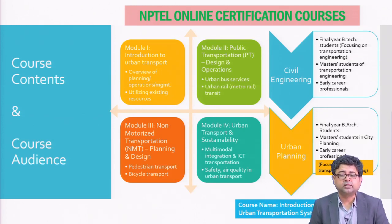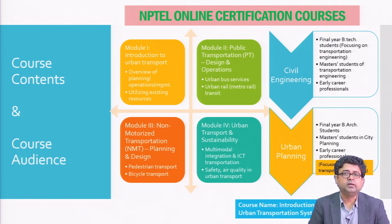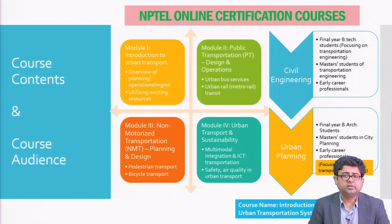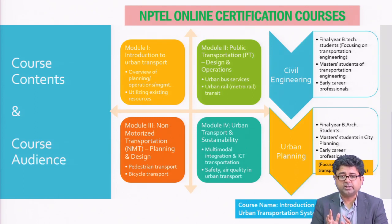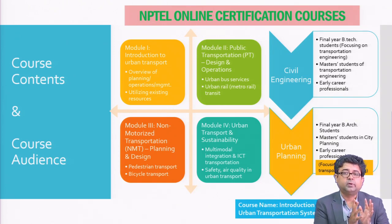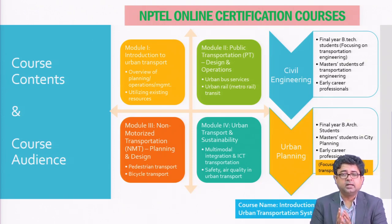So how is the course designed and what are the course contents? The course is broadly designed into four modules. The first module is an introduction to urban transportation, giving you an overview of the planning, operations, and management of these modes as they are done currently, so you understand the gaps. The second module looks individually at sustainable modes of transportation, starting with public transportation — specifically bus transit, bus rapid transit, and urban rail, that is metro rail services, and how to plan for them.